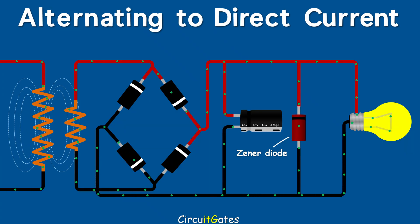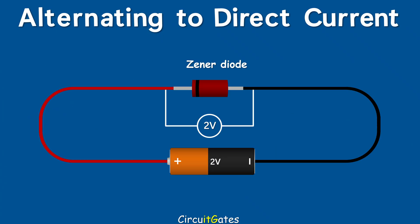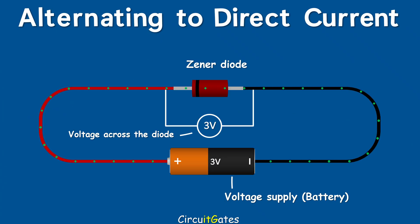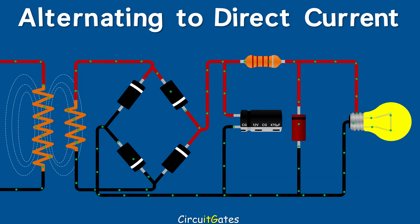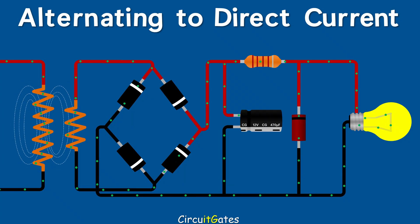Zener diodes are mainly designed to work in reverse, although they can work in forward just as a regular diode. One important characteristic of a Zener diode is that when it starts to conduct, the voltage drop across its terminals does not continue to increase as the supply voltage and current are increased. The voltage you want to be constant across the load must be equal to the Zener voltage — the reverse voltage at which a Zener diode starts to conduct. For example, let's say the voltage needed across this light bulb is 9V; the Zener voltage of this Zener diode must also be 9V.